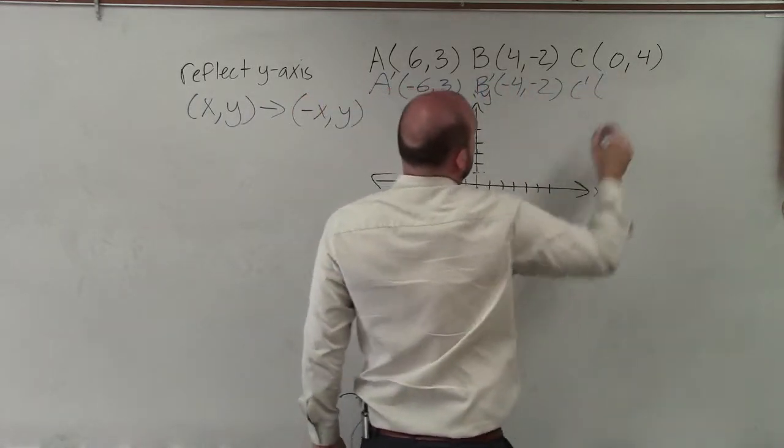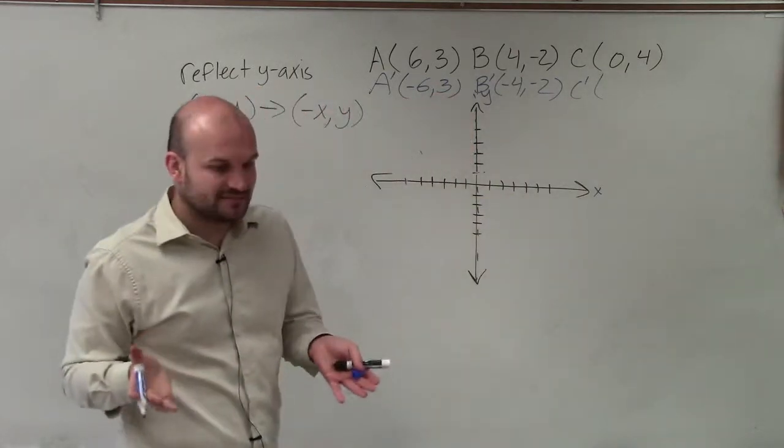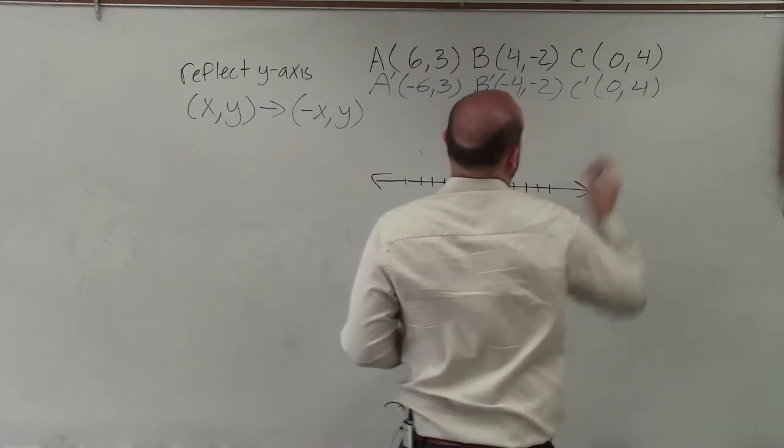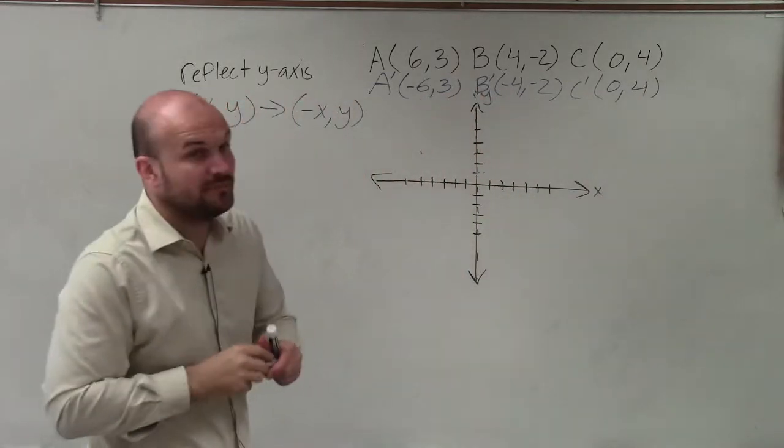B prime is now going to be negative 4 comma negative 2. And c prime, 0 does not have a positive or negative, so that's just always going to be 0 comma 4.